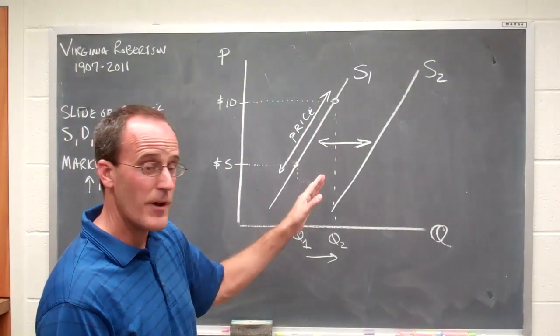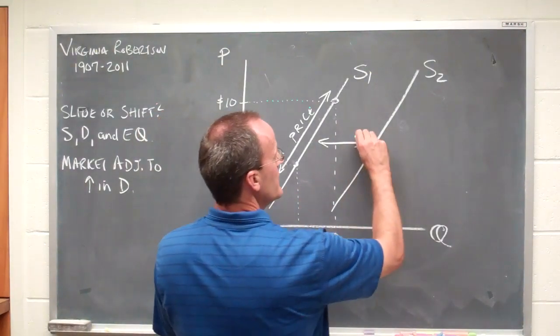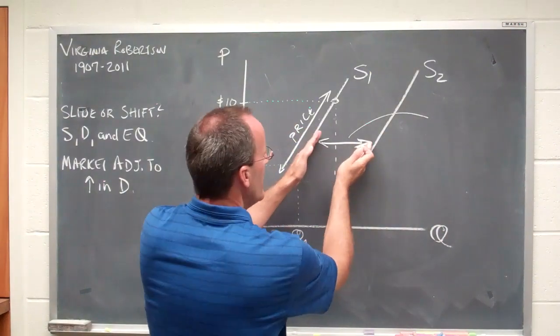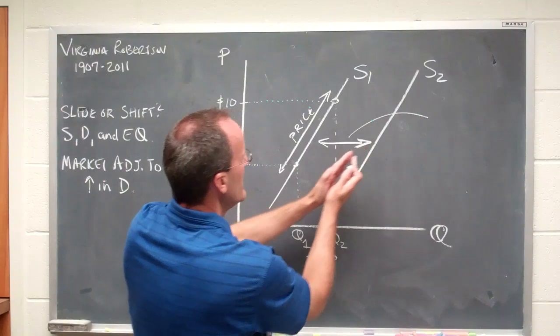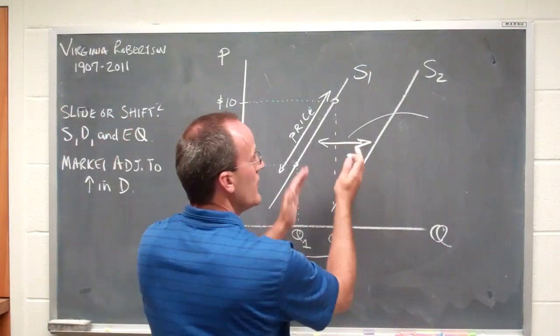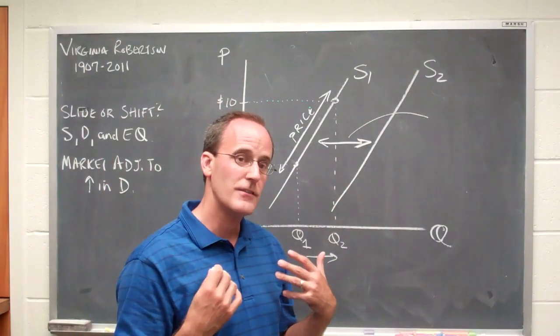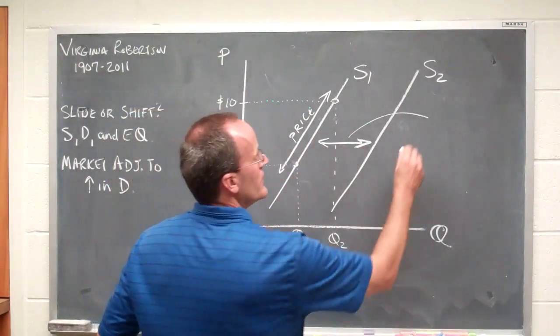Now, the other thing we worry about are actual shifts of the supply curve. And this occurs a number of different ways. So when this happens, notice that we're going to move the entire curve over. And so now we're going to think about things that violate ceteris paribus. We're actually changing the location of the supply curve. And this only happens when something other than price changes.